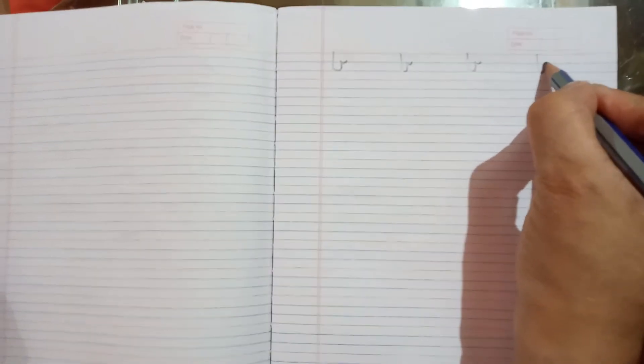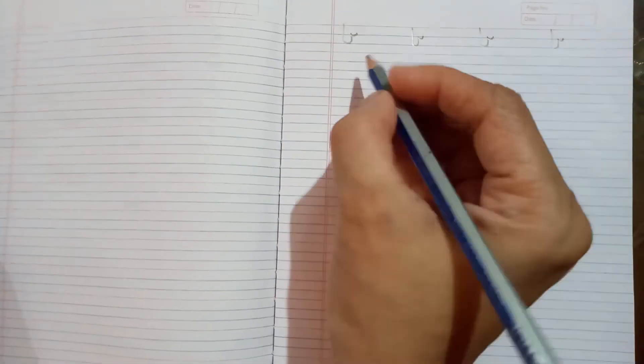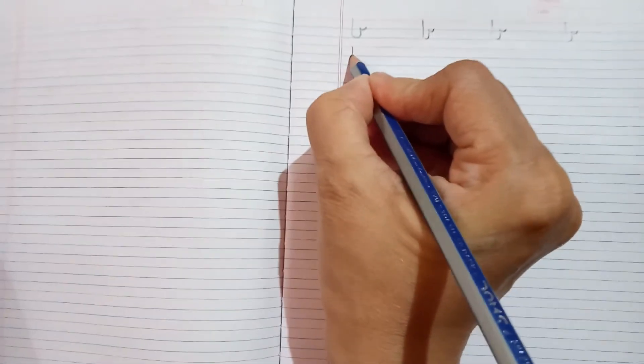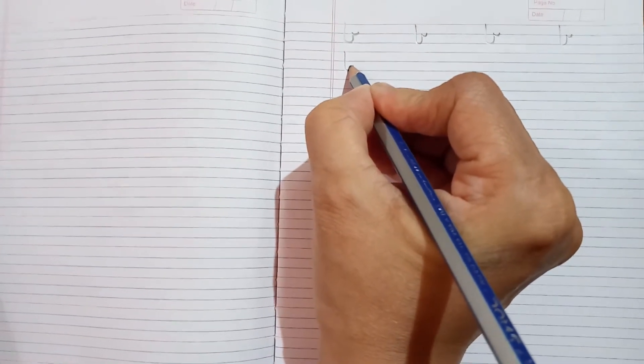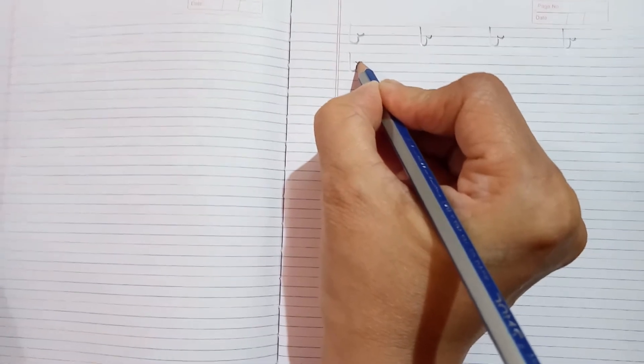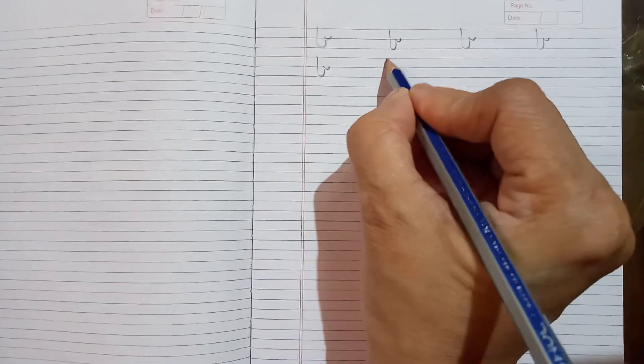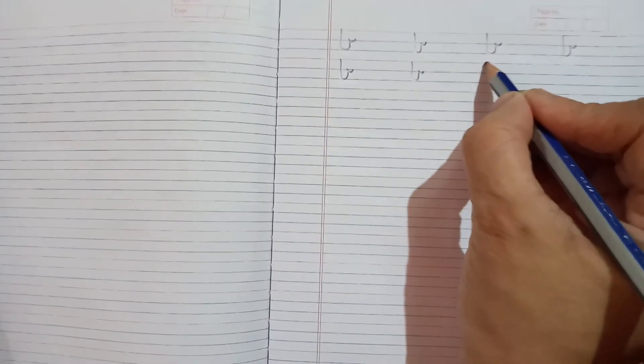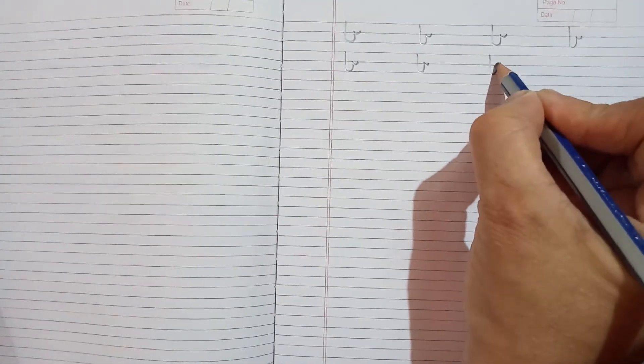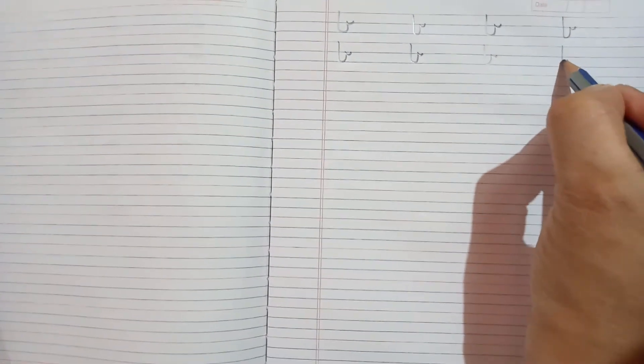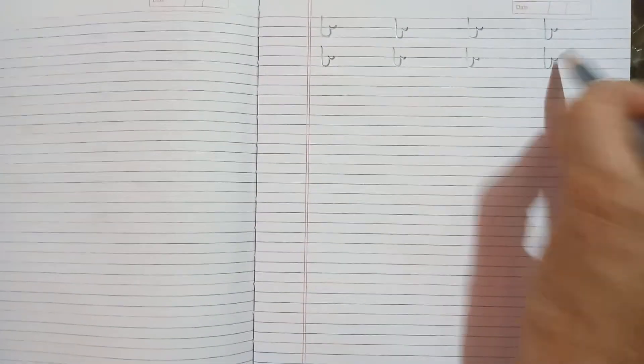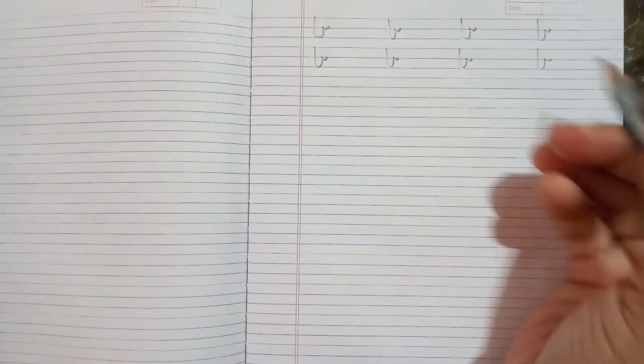One more time we write letter b. Now you have teacher, standing line, turn, go to the blue line and a small curve. So this is how we write small letter b. Now teacher has written two lines, you can finish the entire page.